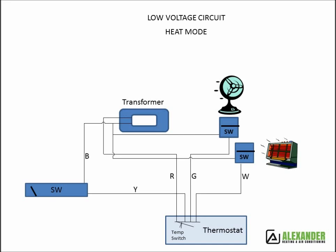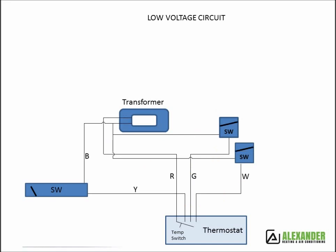In the heat mode, the thermostat also sends the signal in two directions. The G wire runs the indoor fan and the W wire turns on the heater or furnace part of the system.